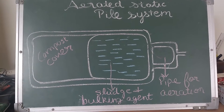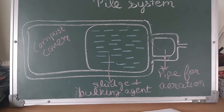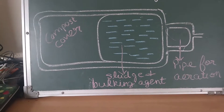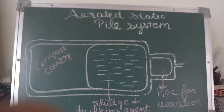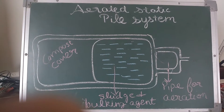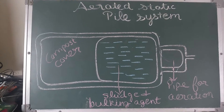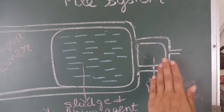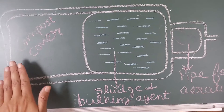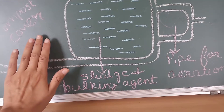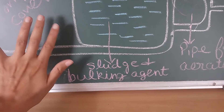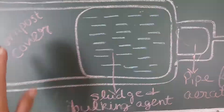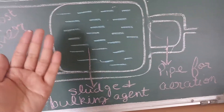Good morning students. If you remember, a few days back we discussed different kinds of composting methods — there were three kinds. The first one is the aerated static pile system. If you observe this diagram very clearly, you'll see that there are pipes going below this system. These pipes are for aeration, and you can also use them as an exhaust piping system.